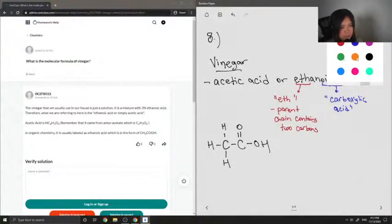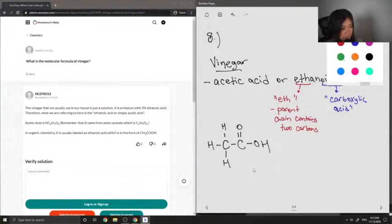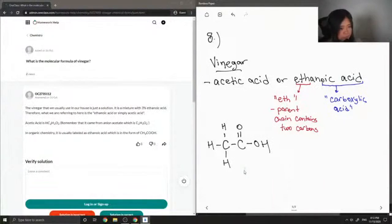And to write out its molecular formula, it can be written in different ways. But the main way is just to write it as CH3COOH, just so that we can clearly see that there's a carboxylic acid group.